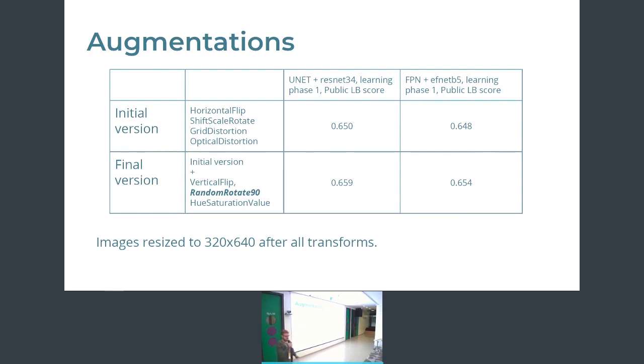One interesting fact is that in our final version, there is a strict augmentation random rotate 90. And the thing is that this augmentation was added here unintentionally because after all these augmentations, we perform resizing. This is why this augmentation didn't break our pipeline. But if you see only the list of augmentations, you could think that it should break it, but it didn't decrease the scores. That is why we left it.